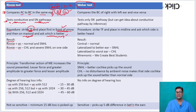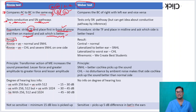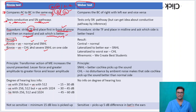How do we interpret Rinne's test results? Rinne's is positive in normal patients and also in patients with sensorineural hearing loss. Rinne's is negative in conductive hearing loss and severe sensorineural hearing loss on one side.